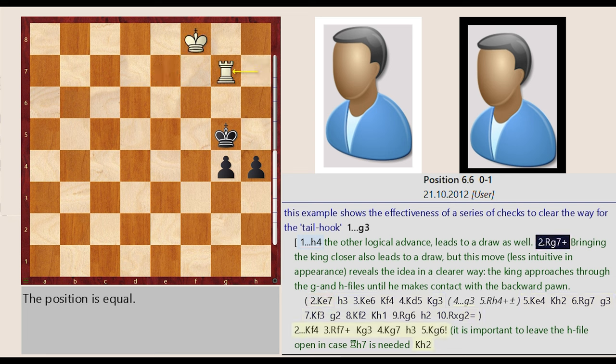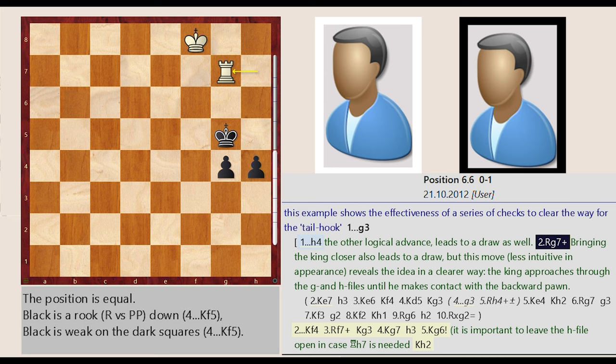Rook h7 g7 Rook h1. Bringing the king closer also leads to a draw, but this move, less intuitive in appearance, reveals the idea in a clearer way. The king approaches through the g and h files until he makes contact with the backward pawn.